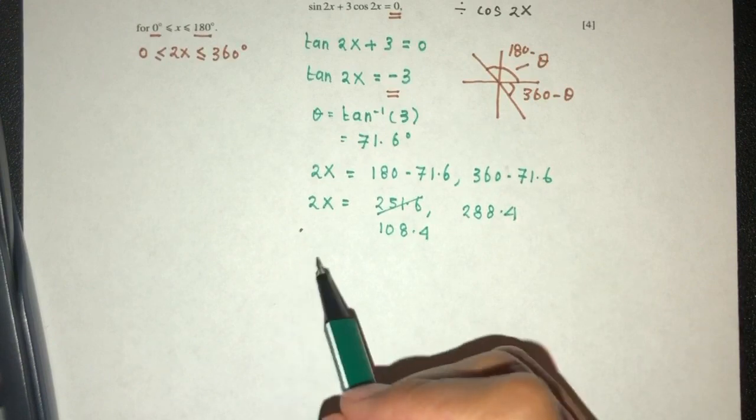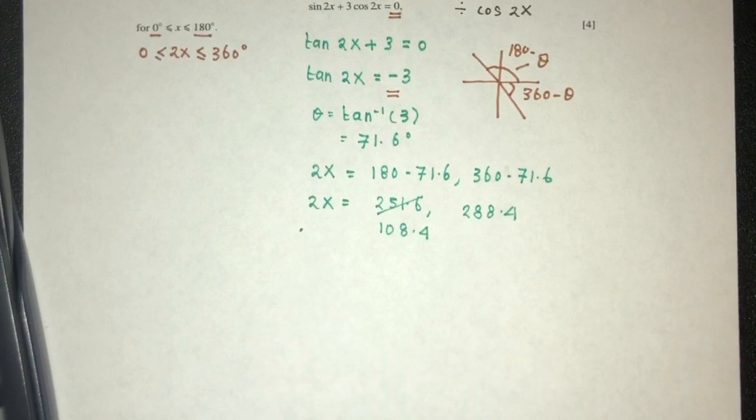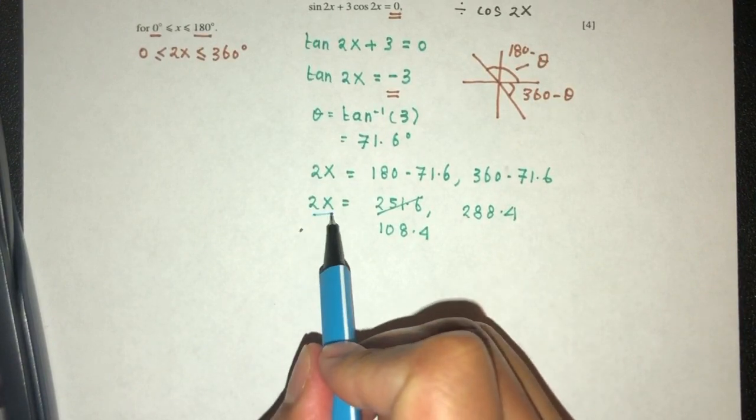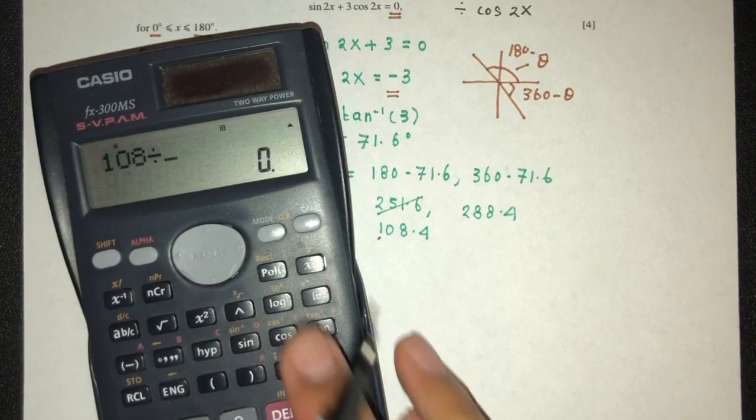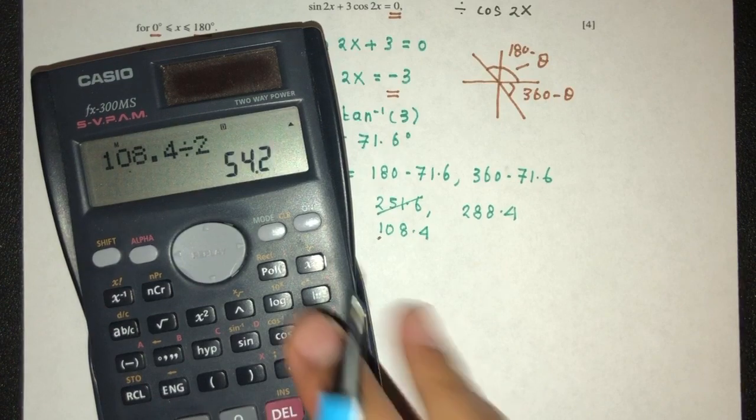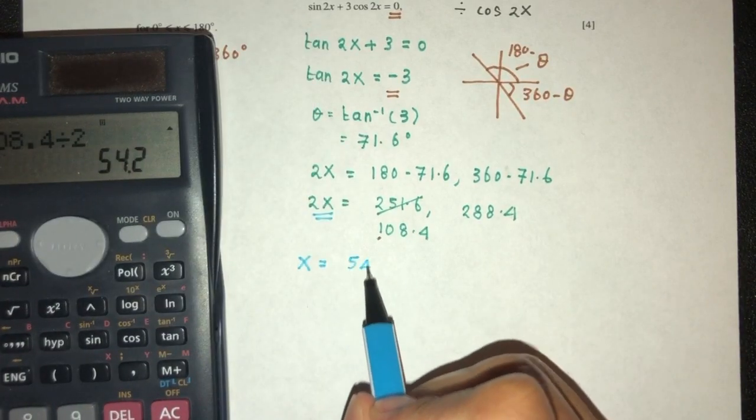Okay, so let me write this down. This one is for 2x. Now x is equal to what? Divide by 2. So 108.4 divided by 2, that should be 54.2.